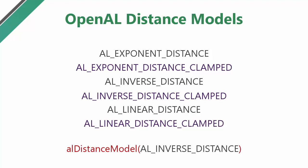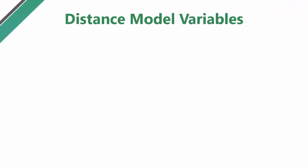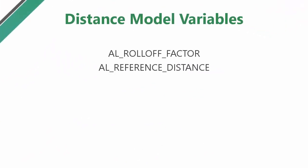Each of these distance models uses a different formula to calculate how the gain changes with distance, and these formulas have some variables which we can choose the values of to fine-tune them. All of the models use a roll-off factor variable and a reference distance variable, and some also use a max distance variable. So after choosing which model we're going to use, we can then choose the values of these variables for each source.